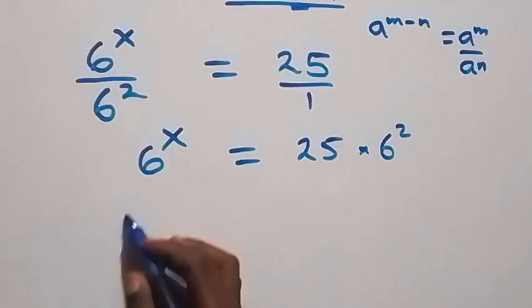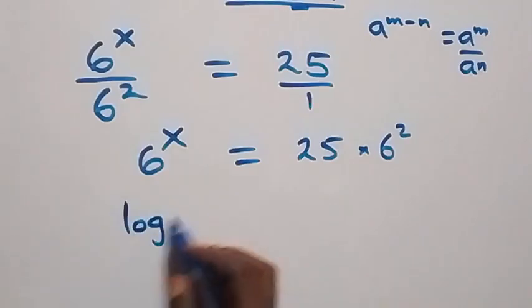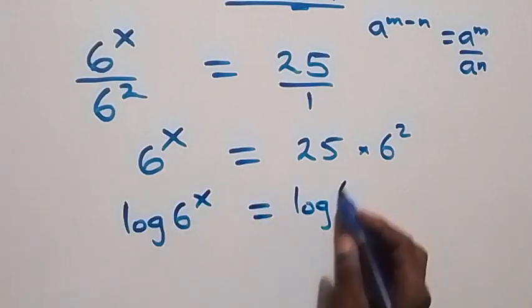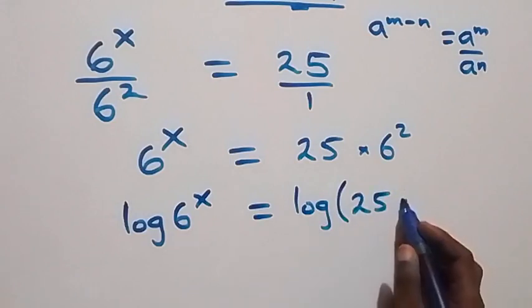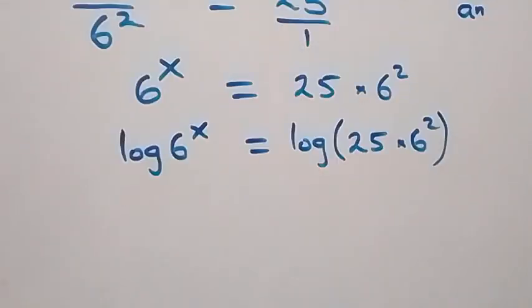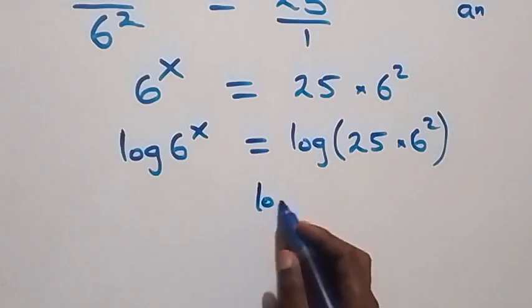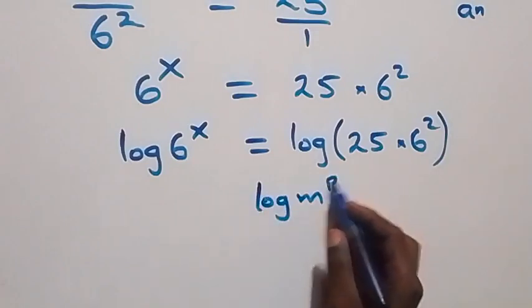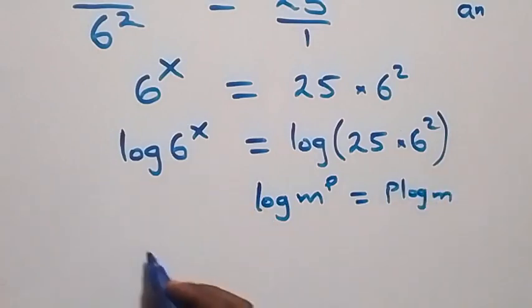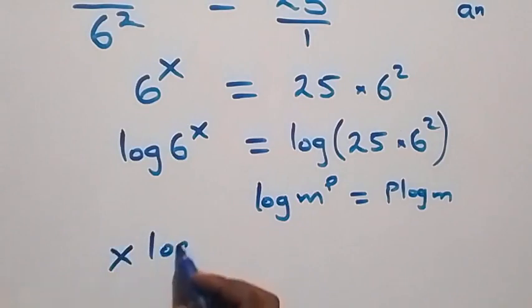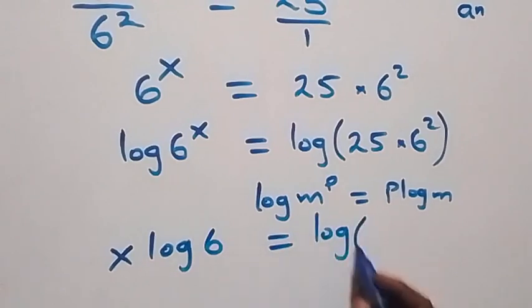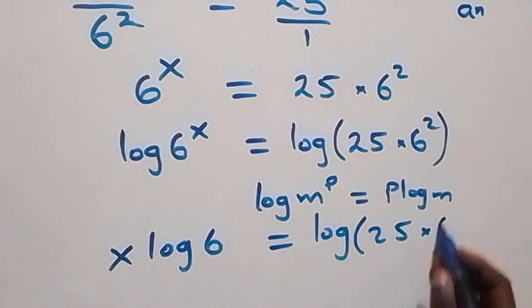The next step is to take the log on both sides. We have log of 6 raised to power x equals log of the bracket 25 times 6 squared. Applying the power law of logarithms, where log m raised to power p equals p log m, the power x comes down: x log 6 equals log of 25 times 6 squared.